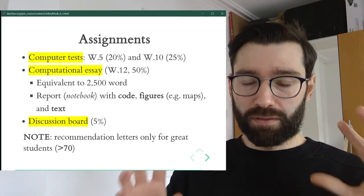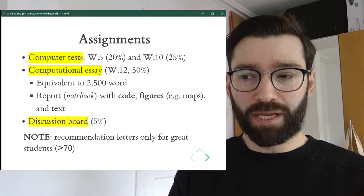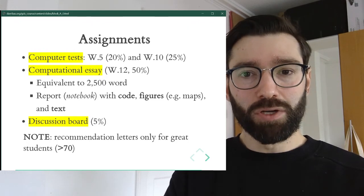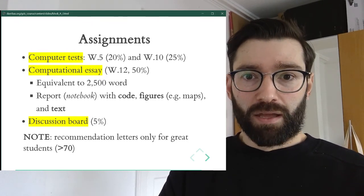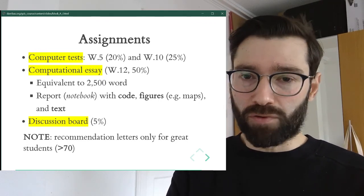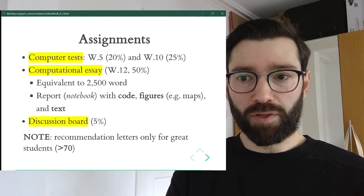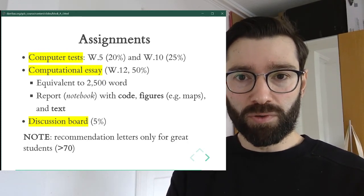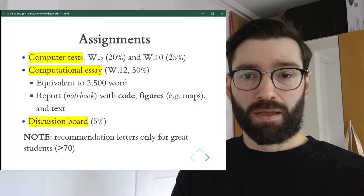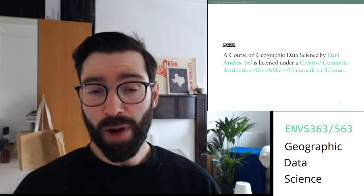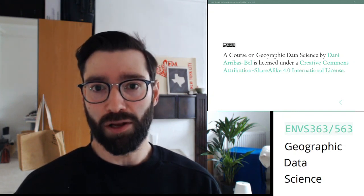A final note — you probably aren't thinking about this just yet, but I want to lay out all the rules of the game from the very beginning. At some point you'll finish this course and go on to do amazing things. Some of those might involve me writing a reference letter, for example for a master's program. I'm really happy to write letters, but I'm always very honest. So I've decided over the years that I only write letters for people who get a 70 or more — a first. Hopefully this overview clarifies what this course is about, how it's going to be run, and gets you really excited about starting to learn geographic data science.